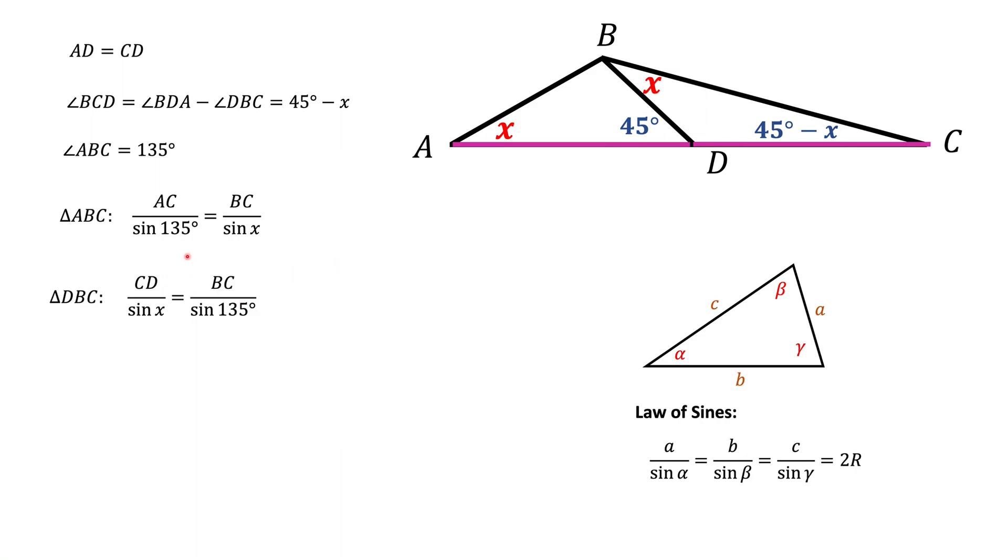The next thing I'm going to do is divide the first equation by the second one. Notice on the right BC and BC are going to cancel out. On the left we have AC and CD, but we should know that AC is actually 2 times CD, and therefore AC over CD will be 2.